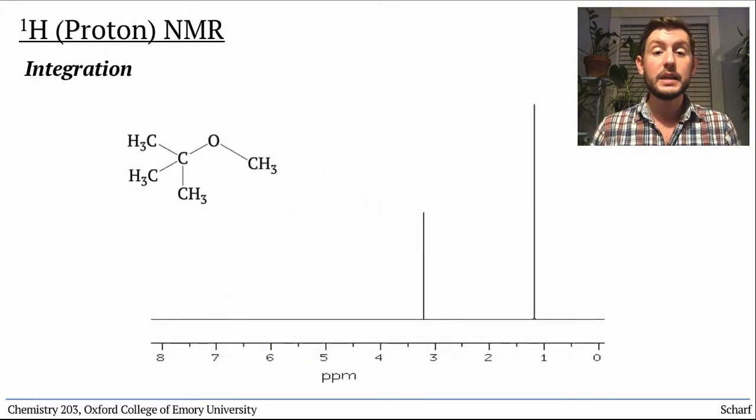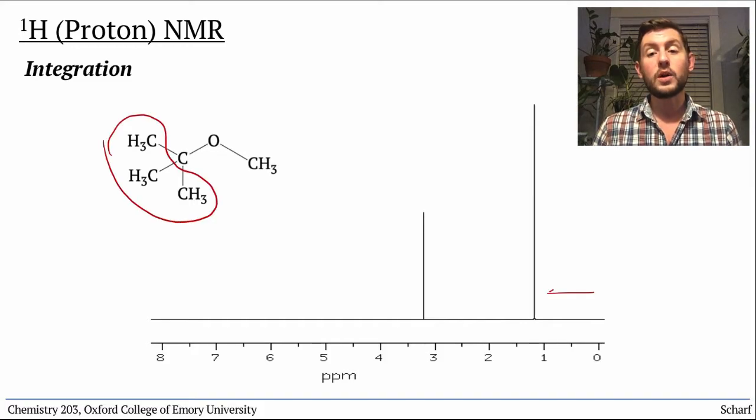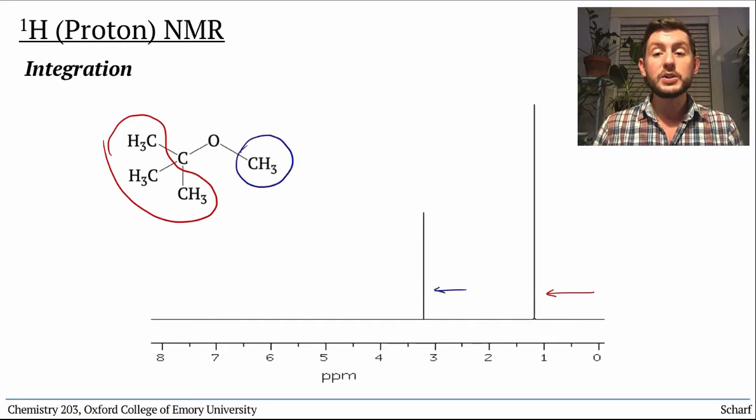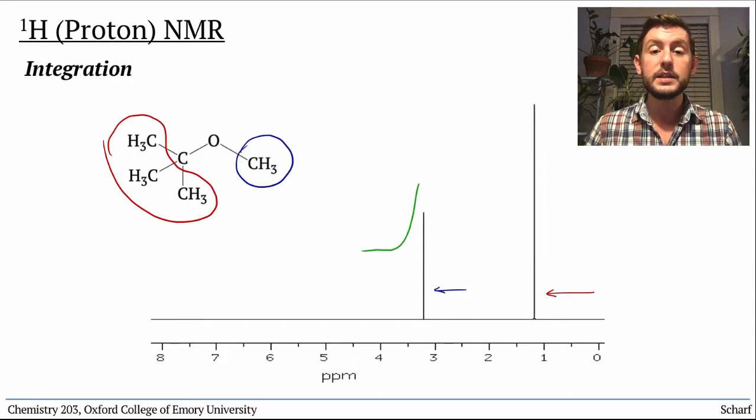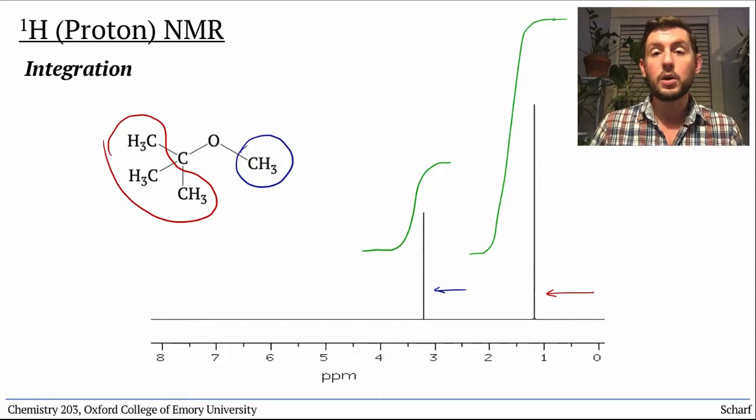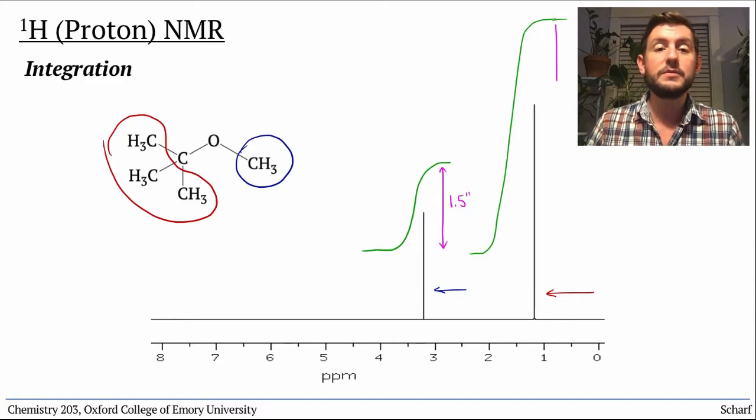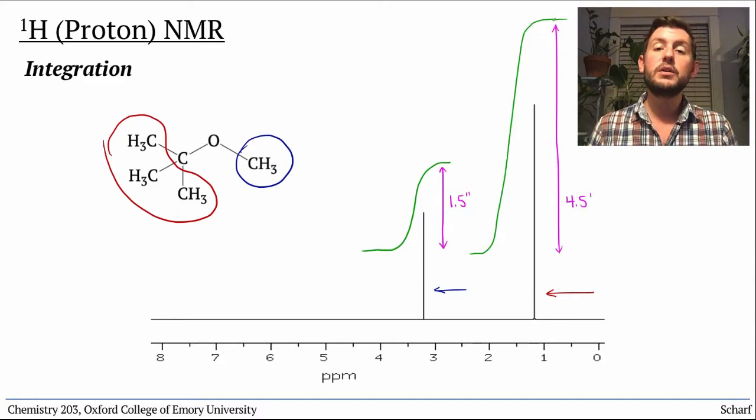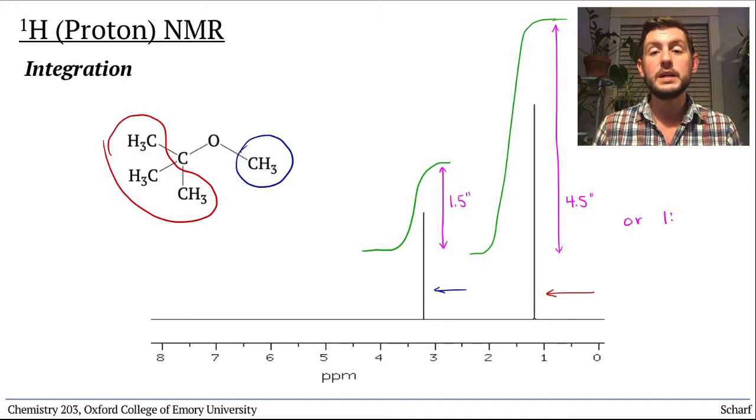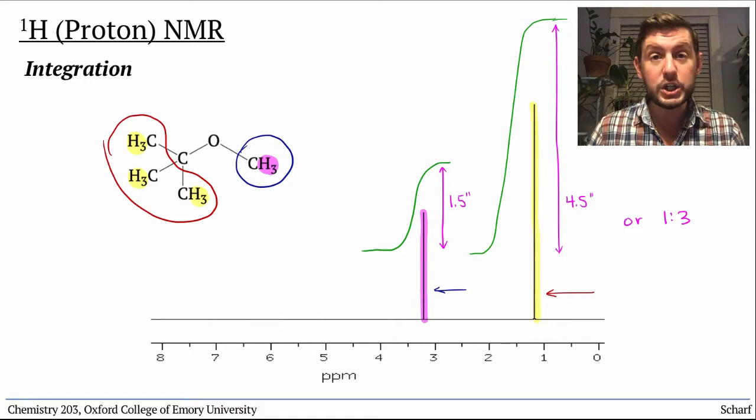Methyl t-butyl ether, for instance, has this spectrum. The t-butyl protons are more upfield because they're farther from oxygen than the methyl groups. If you measured the S-curves that illustrated the integrations of those peaks, you might find that they were 1.5 inches and 4.5 inches. So you'd know that the ratio of hydrogens represented by each peak is 1 to 3. Of course, in the molecule, we can see that there are 3 hydrogens here and 9 here. So it's the ratio of 1 to 3 that we can tell from the integrations on the spectrum.